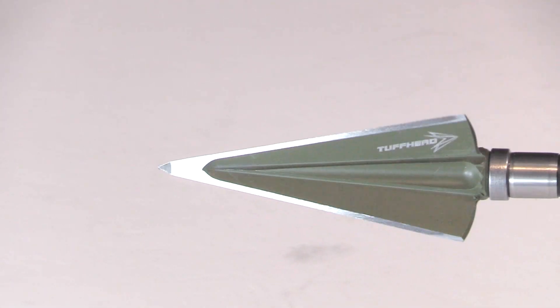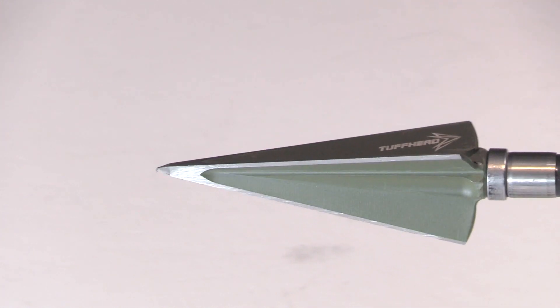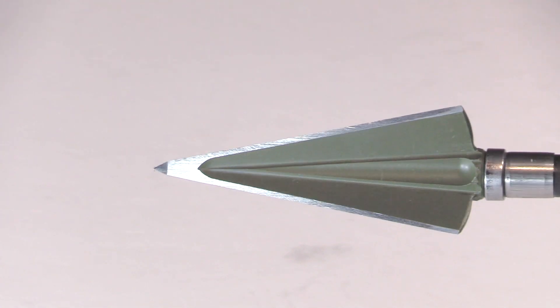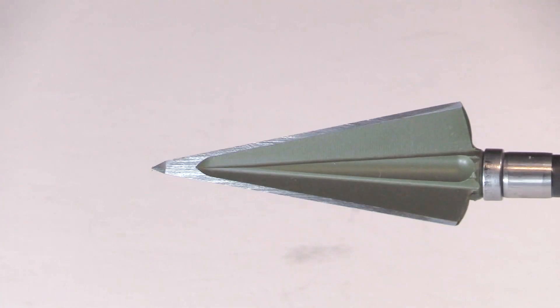Here's a real good look at the broadhead close-up. This is a cool-looking head right here. It's a three-blade head, as you can see, double bevel to it. It's constructed, machined, out of a single piece of S7 tool steel.